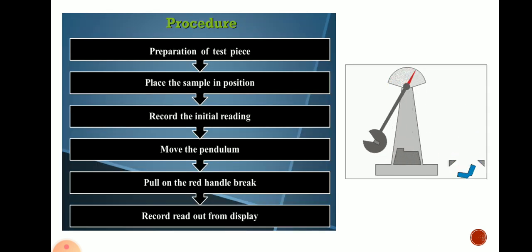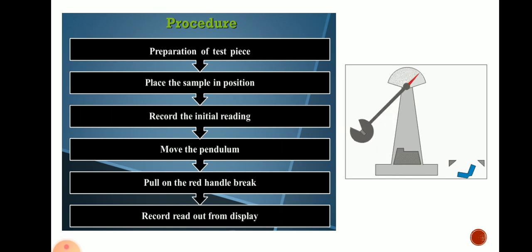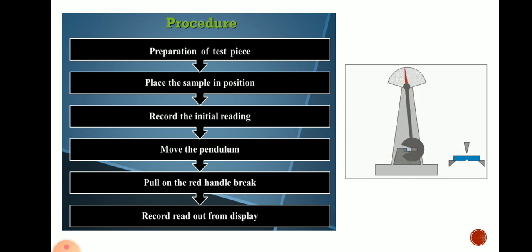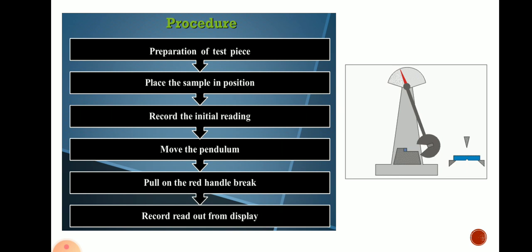Now, let's look at the general procedure for the impact test. First, we prepare a test specimen with a standard size. There are two types of impact testing, and in both types the specimen is placed differently — horizontally in some tests and vertically in others. The first step is preparing the specimen, and the second step is placing the sample in position.